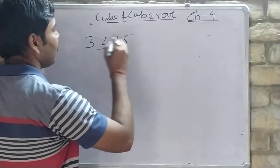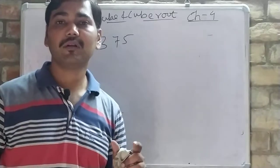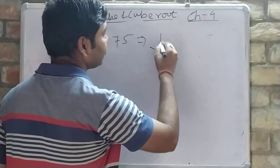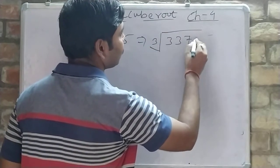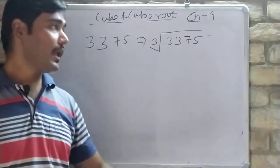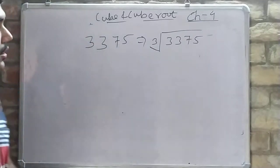Now, if you have a bigger number like 3375 and you have to find its cube root, what do we do? We take the LCM — that is, the prime factorization — of that number.